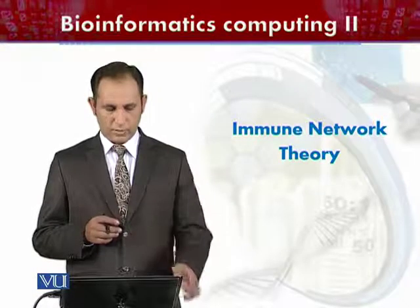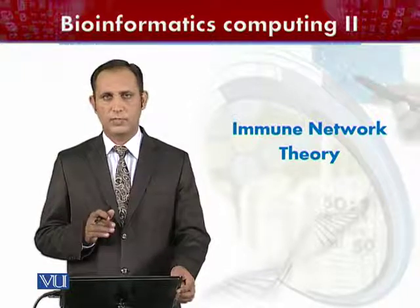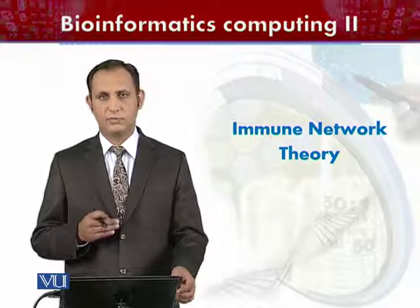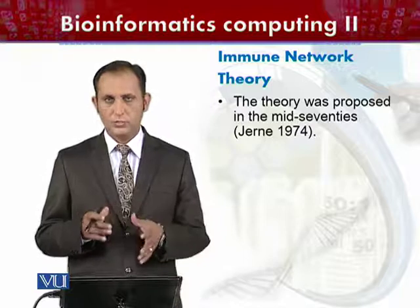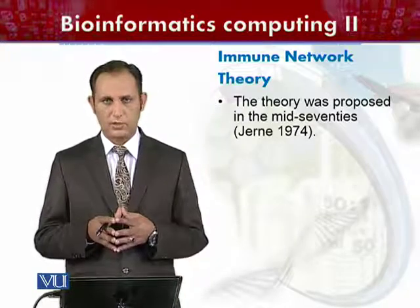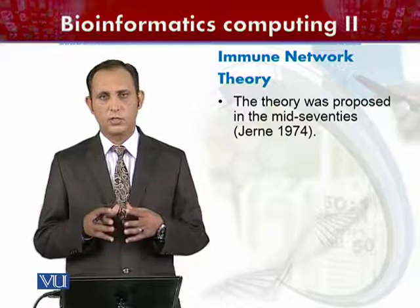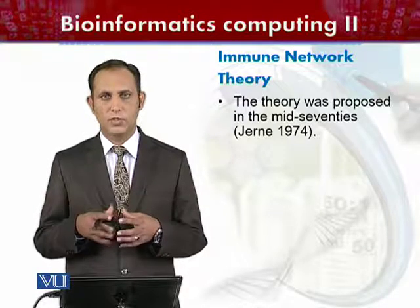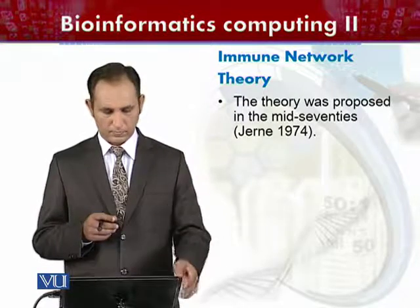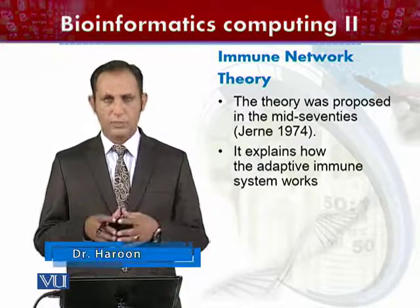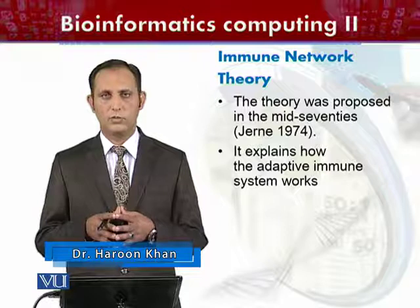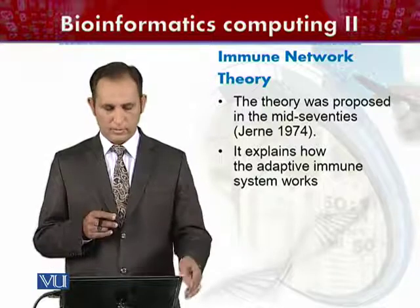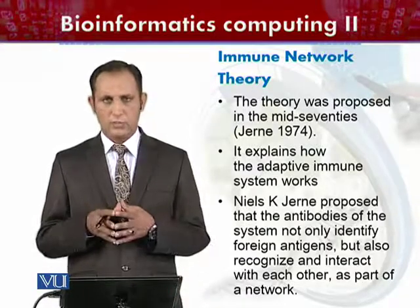Immune network theory is one of the theories proposed for defining in detail the working mechanism of the immune system. This theory was proposed by Niels Jerne in 1974. Jerne was one of the scientists working in the field of immunology and artificial intelligence. This theory explains how the immune system works — its working behavior and mechanism.